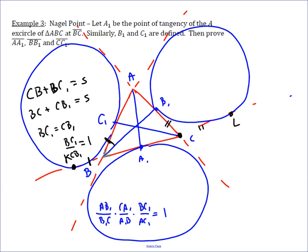And we can further deduce — because the logic there was completely generalized — the exact same result: CA1 over C1A equals 1 for the same reason, and AB1 over B1A also equals 1.